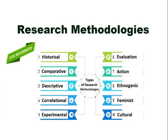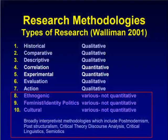Research Methodologies: A Step-by-Step Guide. According to Wallerman (2001), there are 10 types of research methodologies: historical, comparative, descriptive, correlational, experimental, evaluation, action, ethnogenic, feminist or identity politics, and cultural. Historical, comparative, descriptive, evaluation, and action are qualitative, whereas correlation and experimental are quantitative.